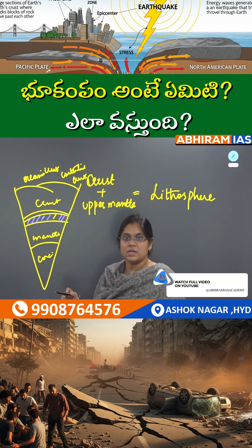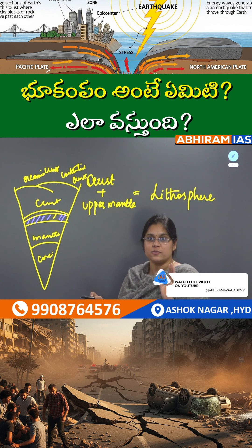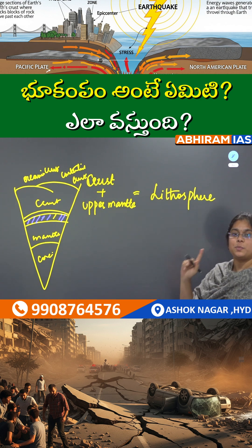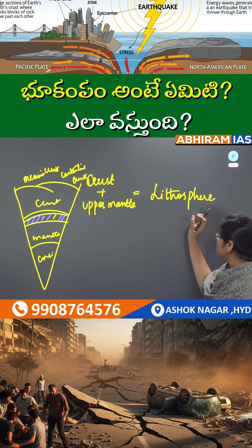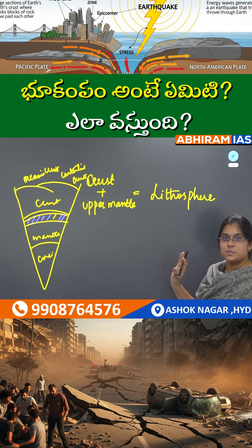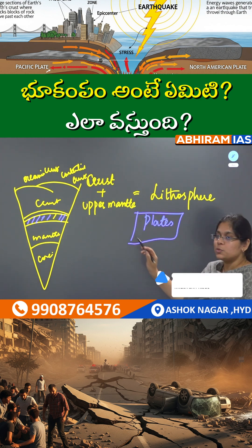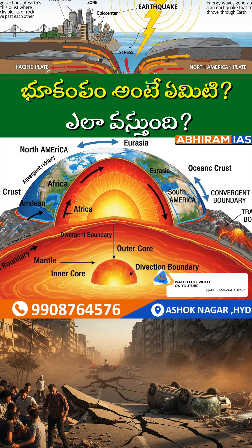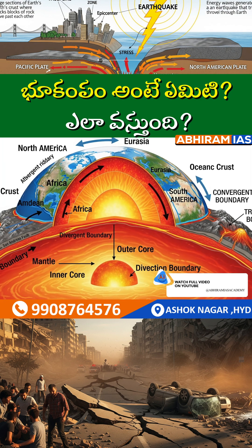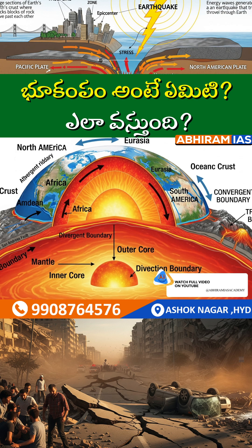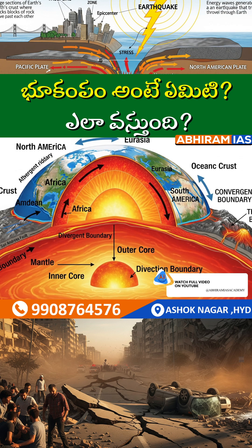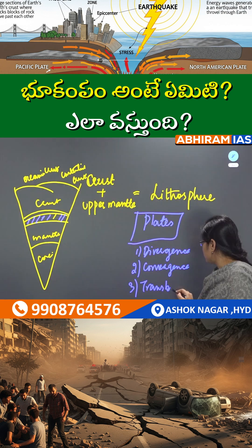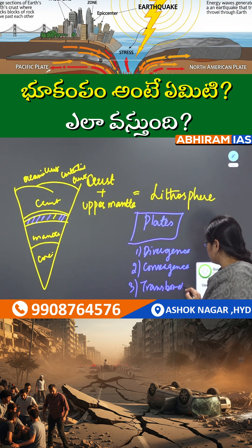The lithosphere is made up of plates. According to plate tectonic theory, there are three movements of the plates: the first is divergence, the second is convergence, and the third is transform plate movement.